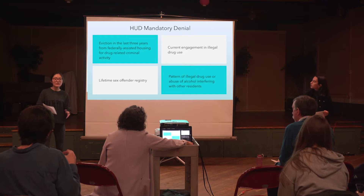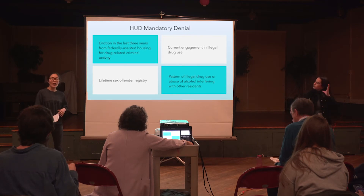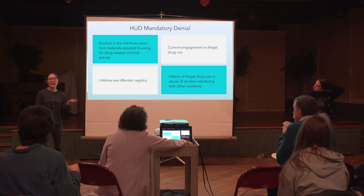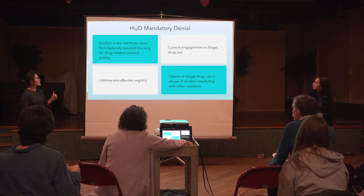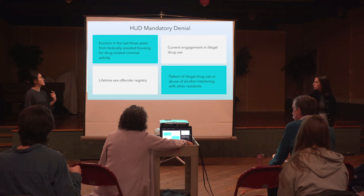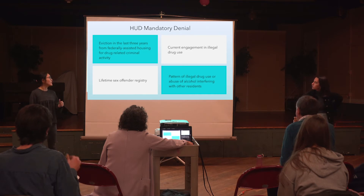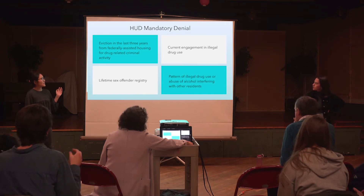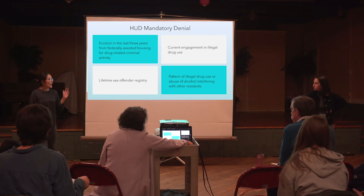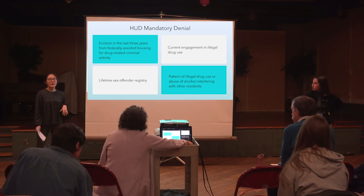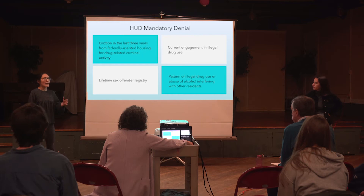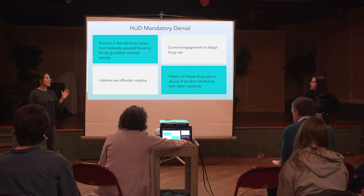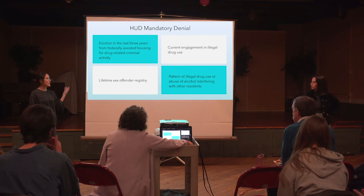All of these documents are supposed to be public, and they all have to include HUD mandatory denial language. These are denial policies that include: eviction in the last three years from federally assisted housing for drug-related criminal activity, current engagement in illegal drug use, lifetime sex offender registry, and a pattern of illegal drug use or abuse of alcohol interfering with other residents. There are many more reasons housing providers can deny admissions, but these are the ones mandated by HUD.